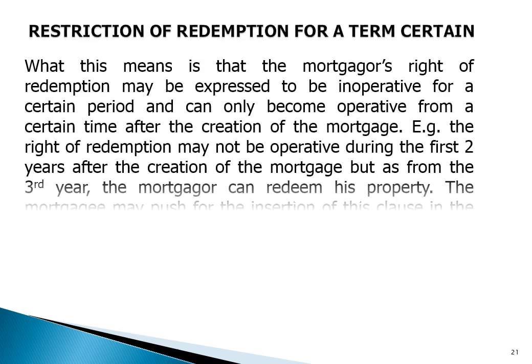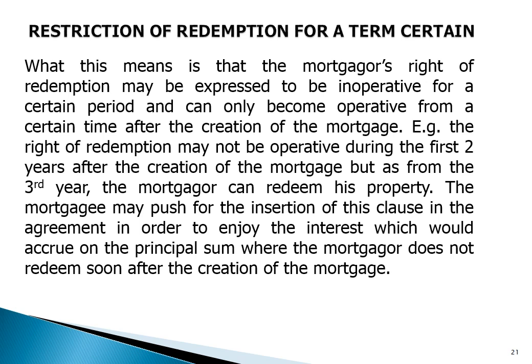Restriction of redemption for a term: this means that the mortgagor's right of redemption may be expressed to be inoperative for a certain period and can only become operative from a starting time after the creation of the mortgage. For example, the right of redemption may not be operative during the first two years after the creation of the mortgage, but from the third year, the mortgagor can redeem his property. The mortgagee may push for the insertion of this clause in order to enjoy the interest accruing on the principal sum where the mortgagor does not redeem soon after the creation of the mortgage.